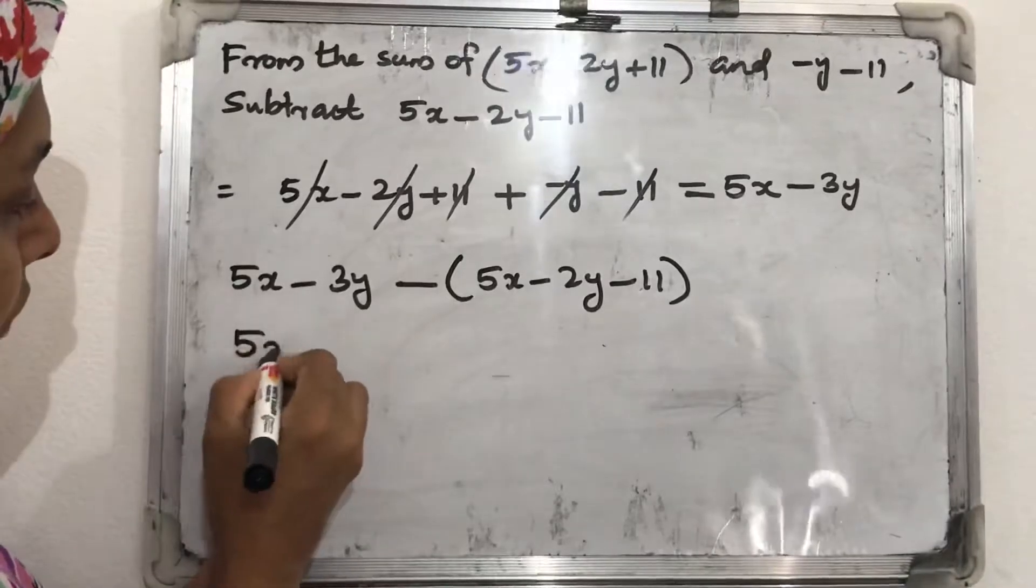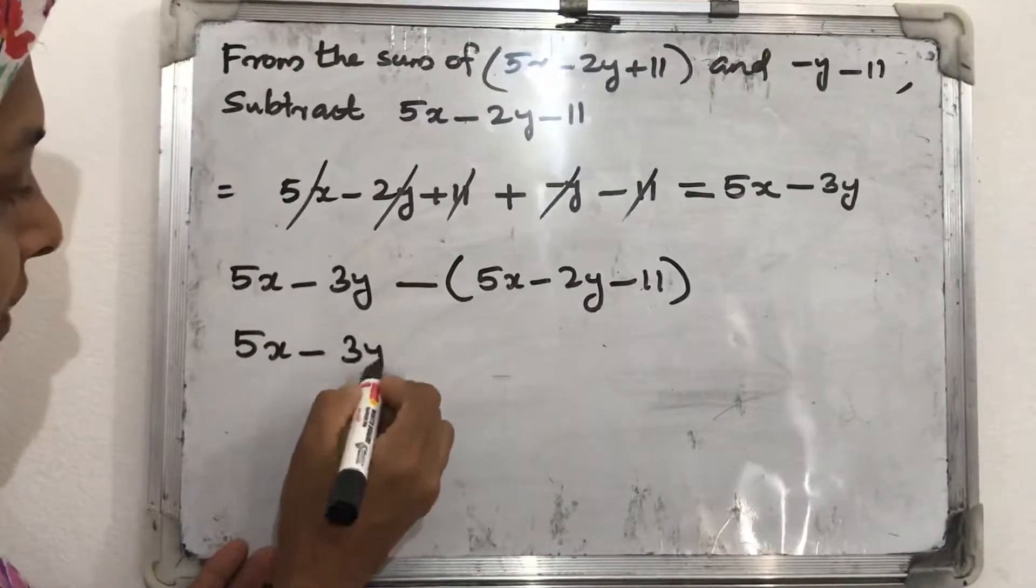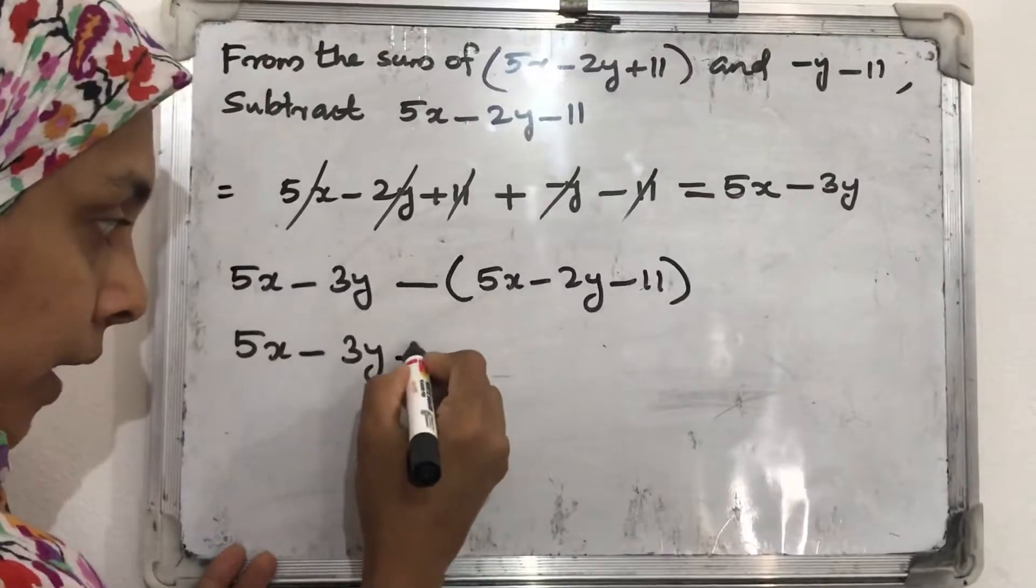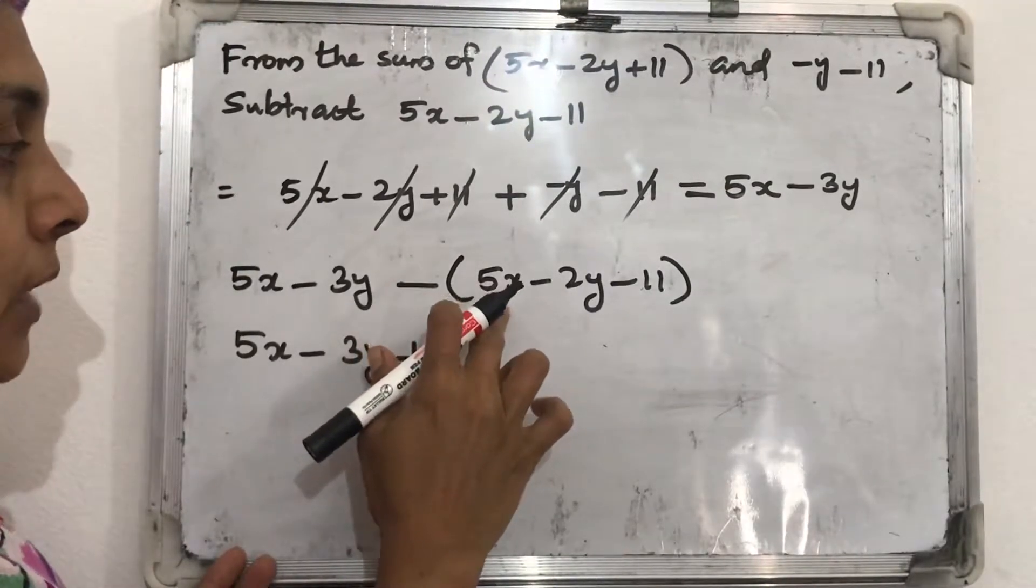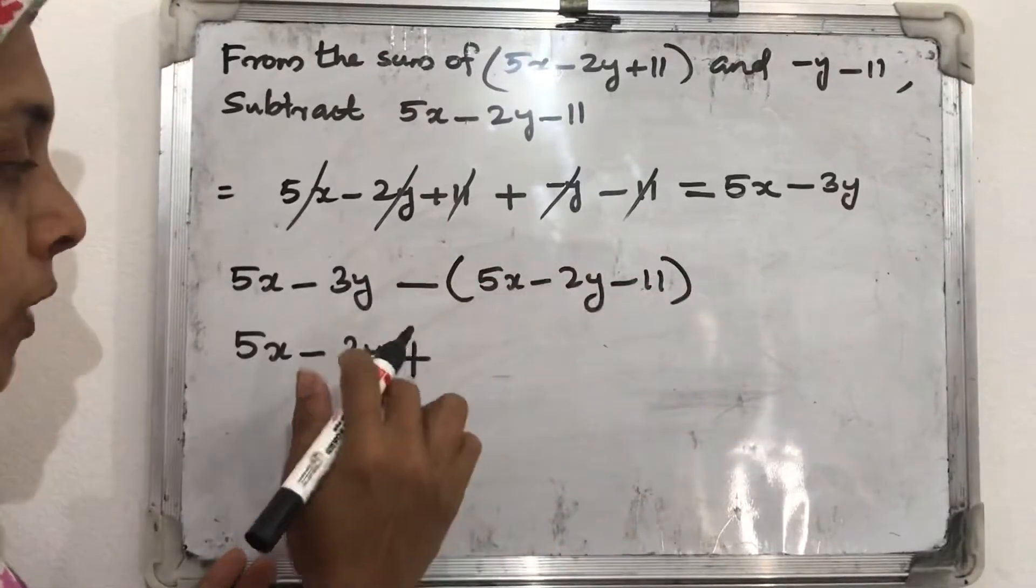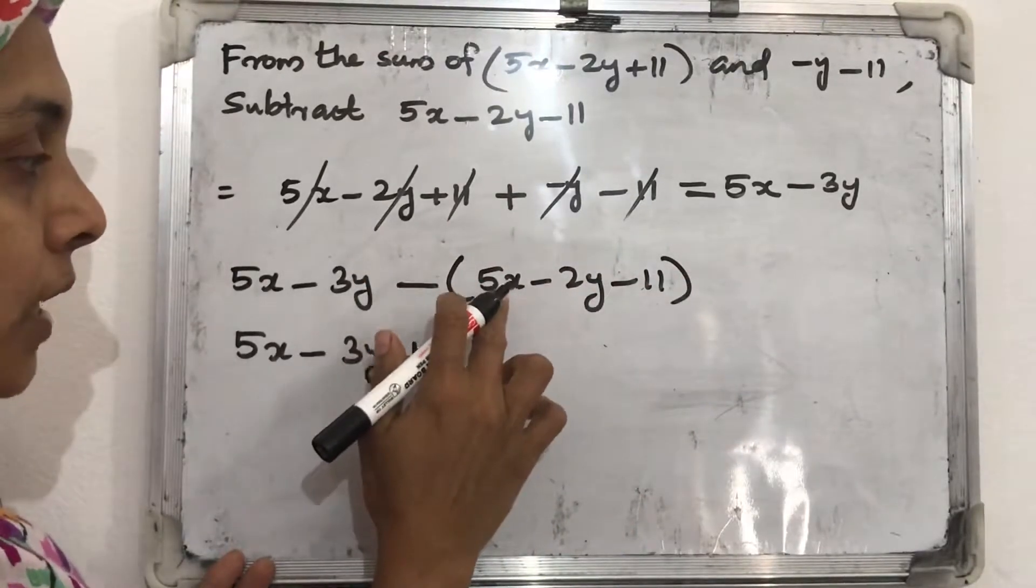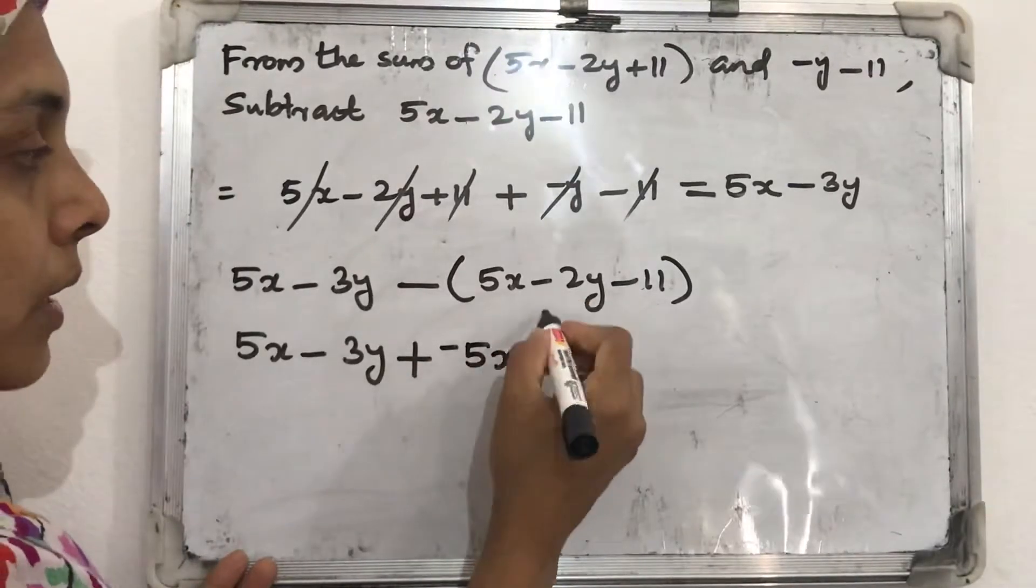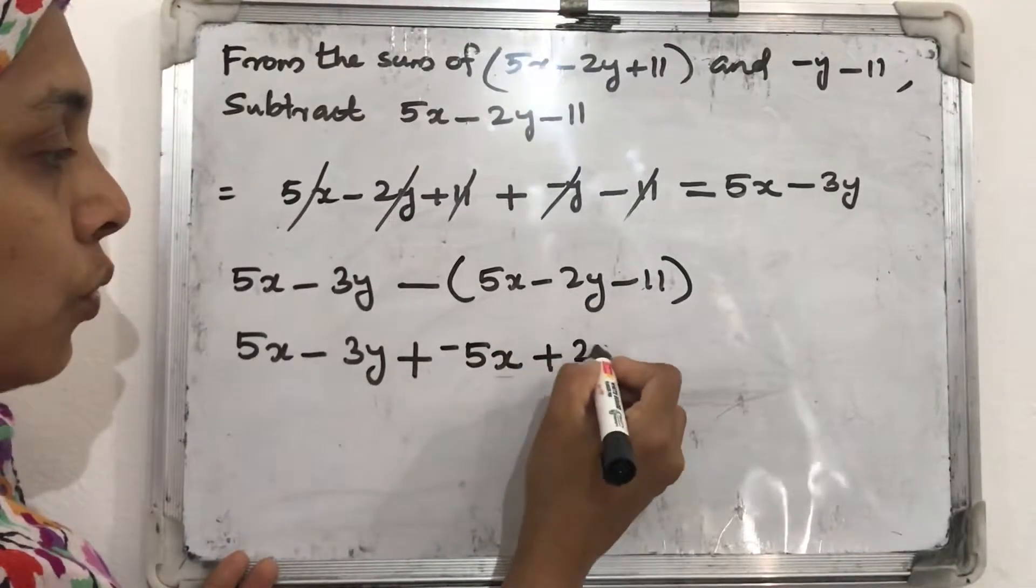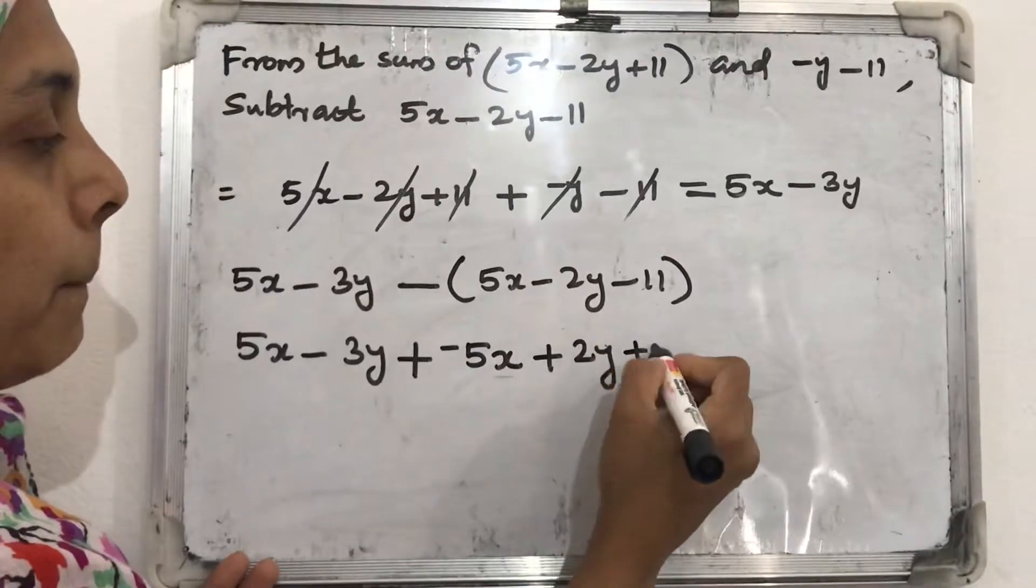So for subtracting this, we want to write first expression as 5x minus 3y. So instead of subtracting, we are adding. Then opposite sign of this full expression. Opposite sign we want to take. What is the sign here? Plus. So its sign will be minus 5x. Then minus 2y becomes plus 2y, and minus 11 becomes plus 11.